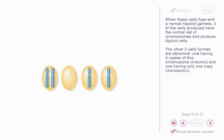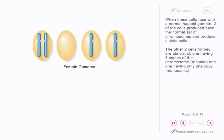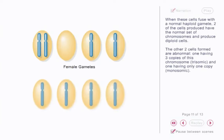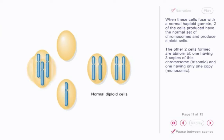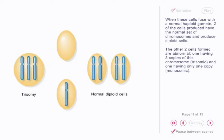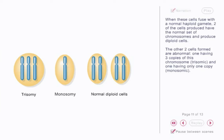When these cells fuse with a normal haploid gamete, two of the cells produced have the normal set of chromosomes and produce diploid cells. The other two cells formed are abnormal: one having three copies of this chromosome — trisomic — and one having only one copy — monosomic.